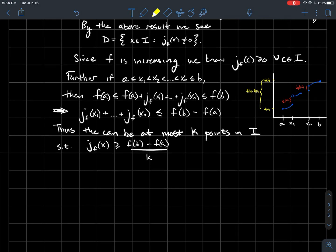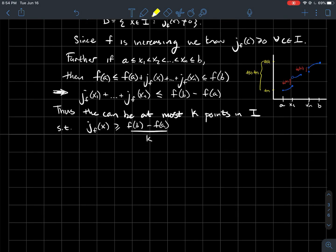So that's something to kind of wrap your head around. And the next thing, so what does that tell me then? So if this has to happen, then that tells me that there can at most be k points in my interval, so maybe k numbers like x1, x2, up to xk, such that though, the jump of your function at that point is bigger than or equal to f of b minus f of a over k. So if there is more than that, then this would not be true.